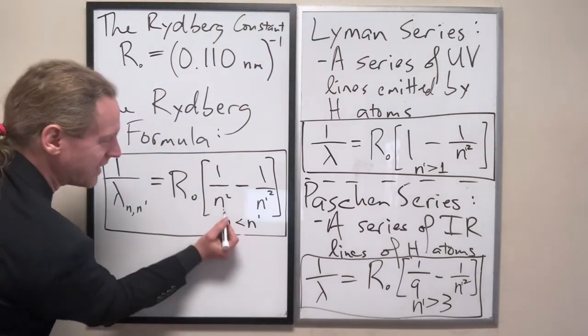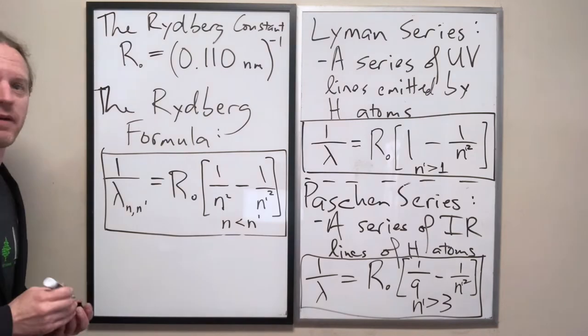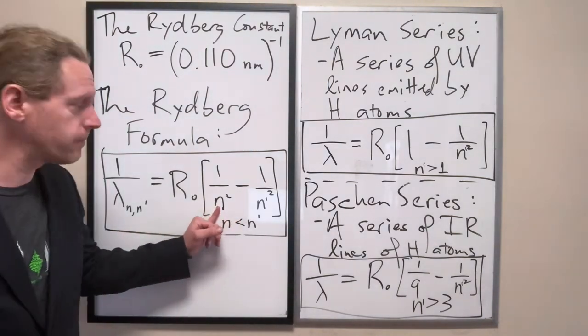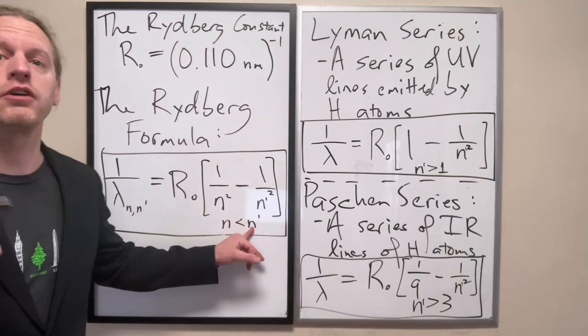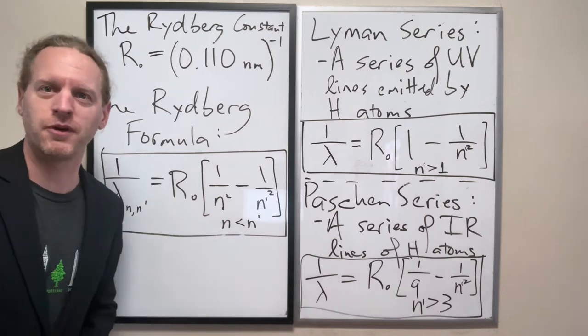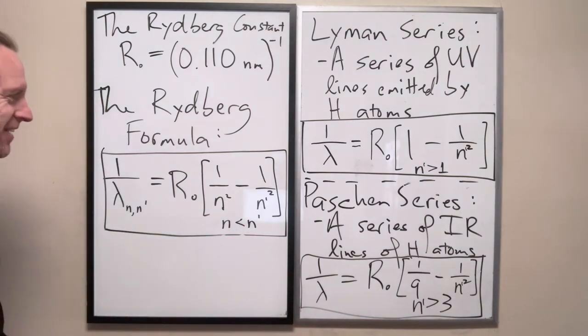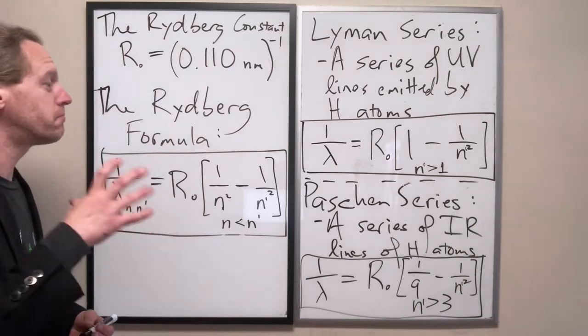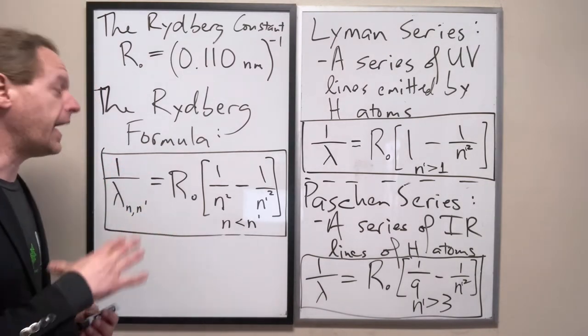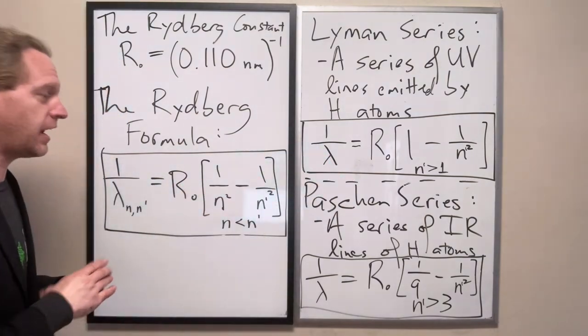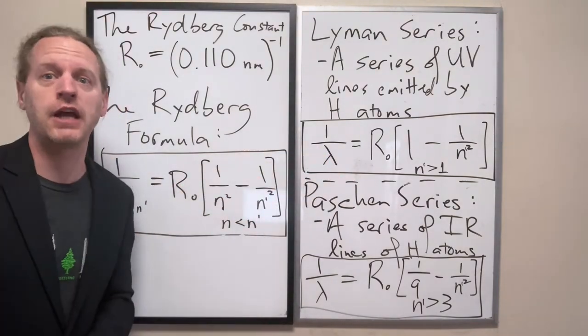But yeah, this is the entirety of the Rydberg formula. You can choose any integer n, 1 or anything greater, choose any other integer greater than n, and you can predict a wavelength that hydrogen will emit, which is fantastic. So we have a single mathematical formula that agrees perfectly with experiment, and at this point you can predict all of these much longer wavelengths that hydrogen can actually emit, test them out, and you're right.